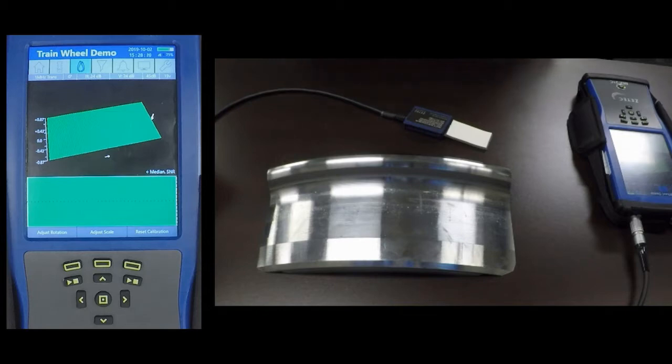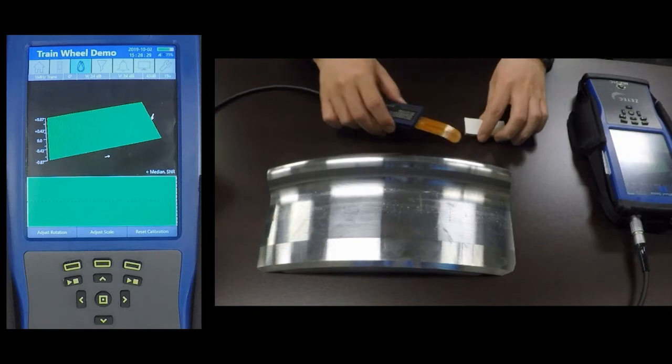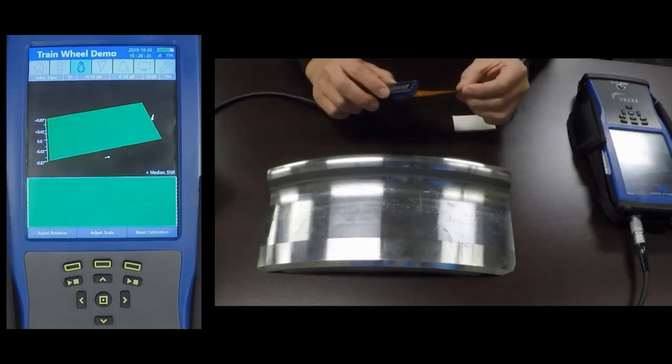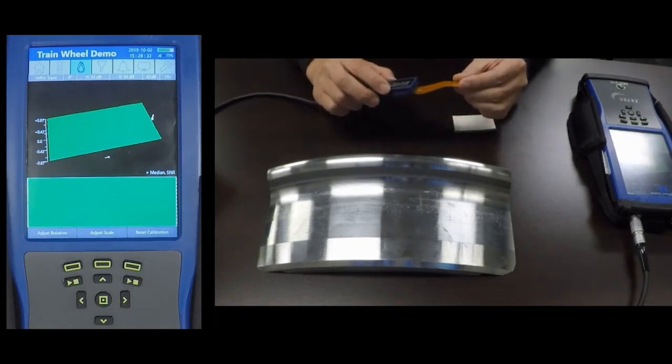This is a demonstration of a train wheel inspection using surface eddy current array. For this demonstration I will be using a MIS-21C with the Surfex tape probe.